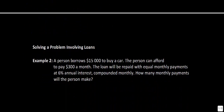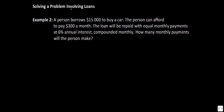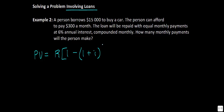Let's go on to example two, solving a problem involving loans. The equation is PV — present value — equal to R multiplied by 1 minus (1 plus i) raised to the power of negative n, all divided by i. A reminder: i equals the interest rate divided by the number of compounds. In this problem the interest rate is 6% compounded monthly, so i equals 0.06 divided by 12, which gives 0.005.